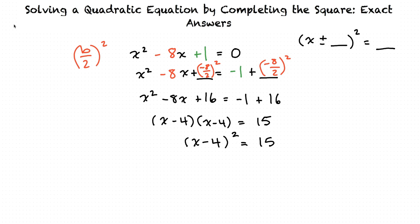That's right, and see here that the term in the factors, negative 4, is the number we got when we took negative 8 divided by 2 before squaring it.